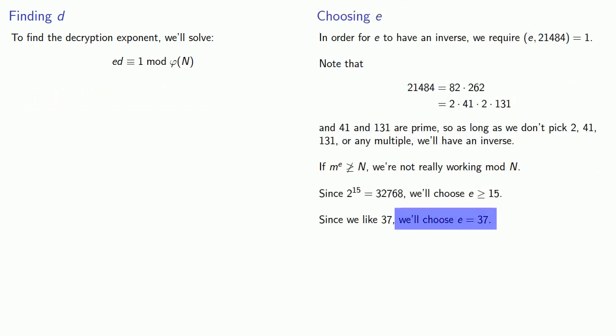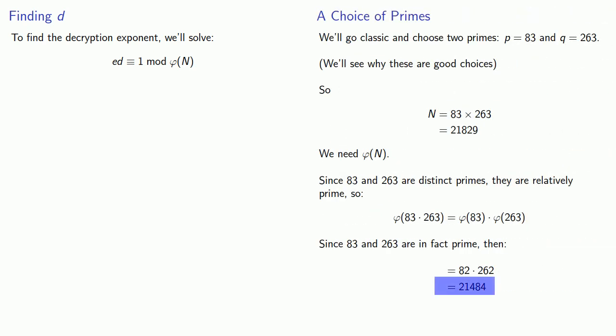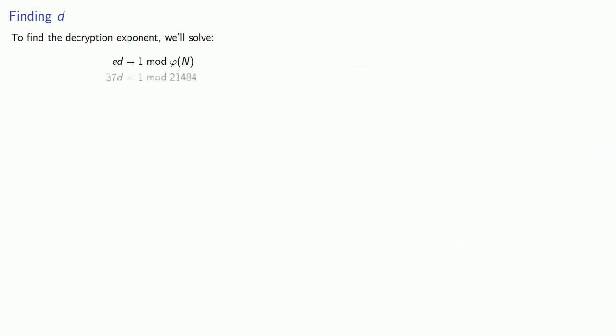So now we want to find the decryption exponent, so we need to solve ed congruent to 1 mod phi of n. Remember we chose e to be 37. We found phi of n to be 21484, and so the congruence we're trying to solve is 37d congruent to 1 mod 21484. So we'll try to solve this congruence through our Diophantine method. So this congruence requires 37d minus 1 to be a multiple of 21484.